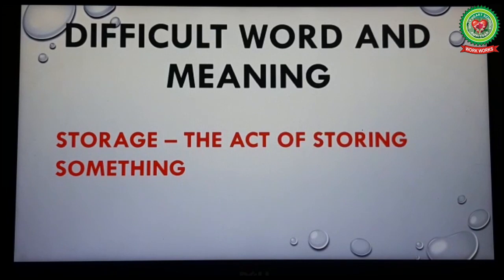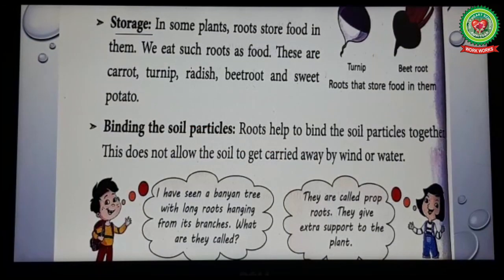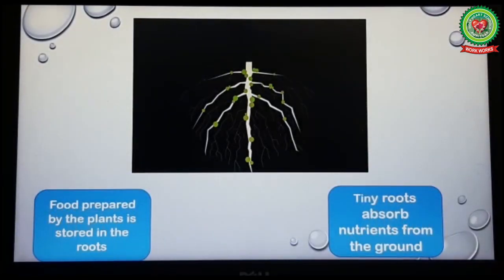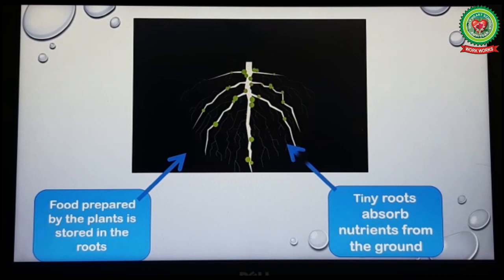Number three: Storage. Underline the word 'storage' and write its meaning: the act of storing something. In some plants, roots store food in them, and we eat such roots as food. These tiny roots absorb nutrients from the ground, and the food prepared by the plants is stored in the roots.